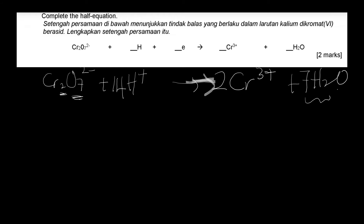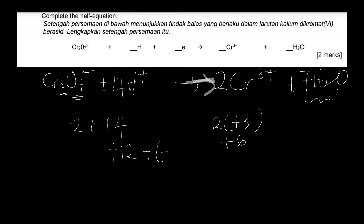Now balance the charge. On the left: −2 (from Cr₂O₇²⁻) plus +14 (from 14H⁺) gives +12. On the right: 2 × (+3) = +6. To balance from +12 to +6, you add 6 electrons to the left side. So the complete half equation is: Cr₂O₇²⁻ + 14H⁺ + 6e⁻ → 2Cr³⁺ + 7H₂O.